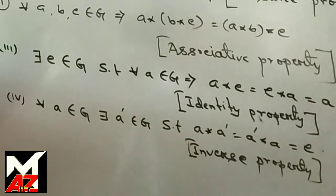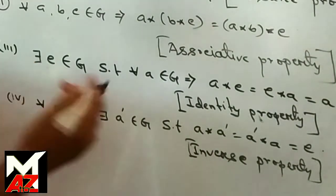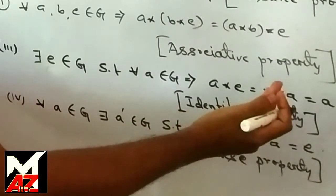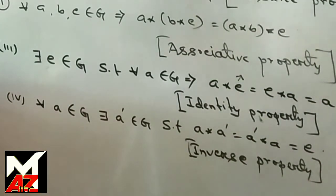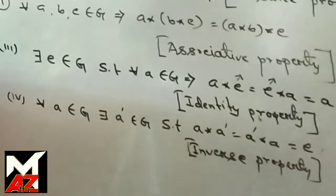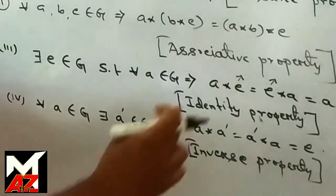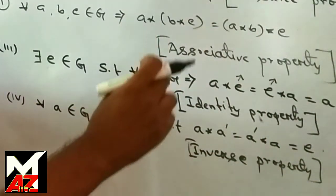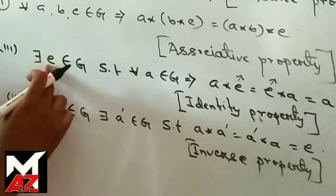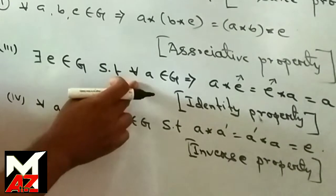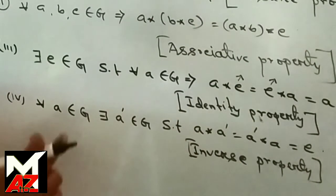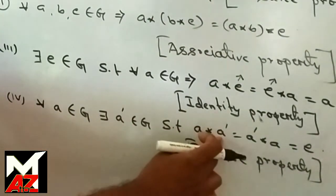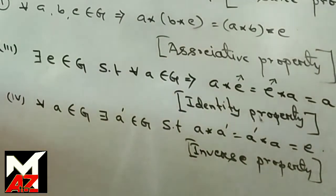It is important that E operated from the right is called the right identity element, and E operated from the left is called the left identity element. If the right identity and left identity are the same, then it is called the identity element. Similarly, A star A' is the right inverse and A' star A is the left inverse.